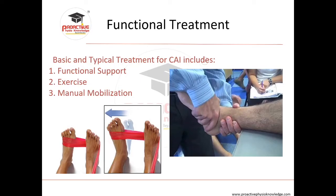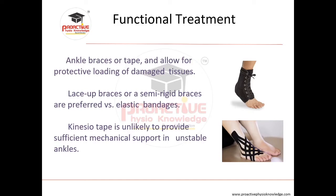Basic treatment for chronic ankle instability includes functional support, exercise, and manual mobilization. Manual mobilization is required when patients come after three to four weeks of immobilization to improve range of motion. Exercise therapy and immobilization have been investigated in systematic reviews. Elastic bandage has fewer complications than tape but is associated with delayed return to work. Kinesio tape is unlikely to provide sufficient mechanical support in an unstable ankle, but it helps reduce swelling and improve proprioception.